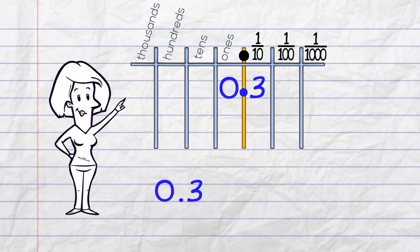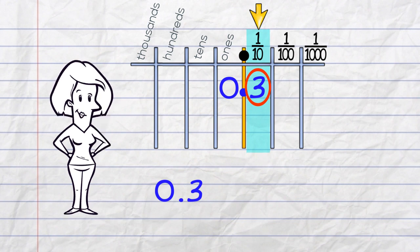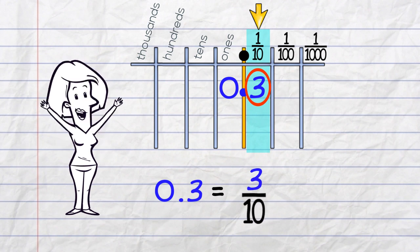There is only one digit after the decimal point. And it's sitting in the tenths column. So 0.3 is the same as three tenths. Because the three is in the tenths column. Easy!